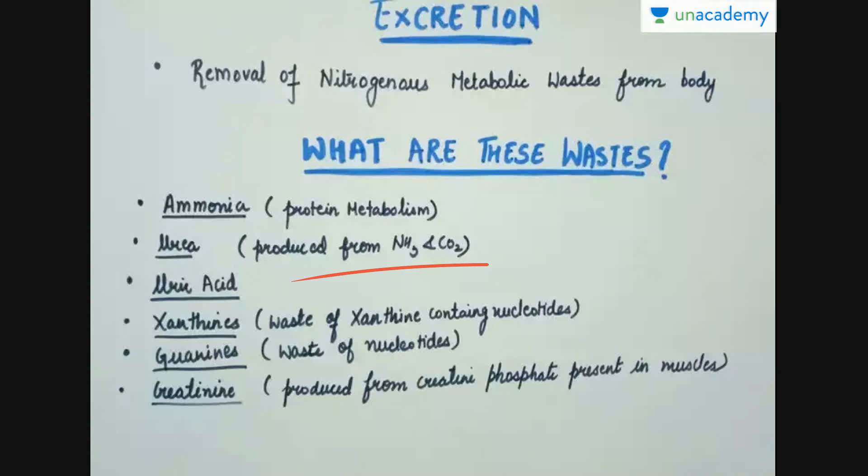We are also going to deal with the process of how ammonia is converted to urea. Then we have uric acid, which is another type and is mostly in crystallized form. It is not produced in mammals as such, but in other organisms like birds, uric acid is one of the major nitrogenous metabolic wastes excreted in the form of pellets. Then we have xanthines, which are produced by the metabolism of nucleotides. The degradation of these nucleotides leads to a product called xanthine, which is poisonous and needs to be removed.